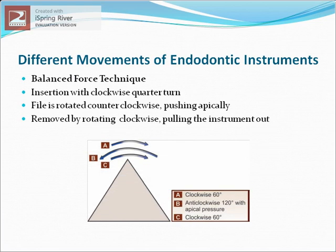In the balanced force technique, the instrument is first inserted into the canal by moving it clockwise with a one-quarter turn. Then, to cut the dentine, the file is rotated anti-clockwise while simultaneously being pushed apically to prevent it from moving out of the canal. Finally, the file is removed by rotating it in a clockwise direction while simultaneously pulling the instrument out of the canal. The movements are shown in the attached picture.